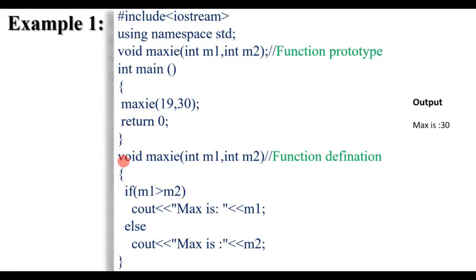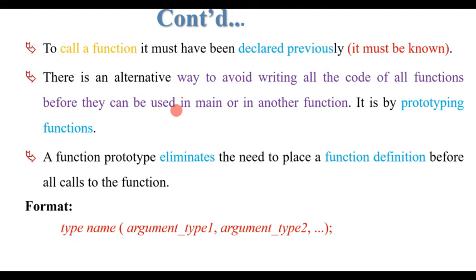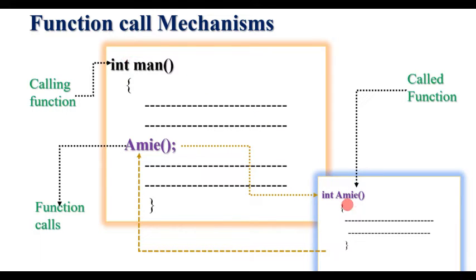The function definition, the function prototype or function declaration, and the calling of the function — this is what we call it. When we look at this diagrammatically, the function call mechanism means the main function uses the declaration. We call the function before the main function.